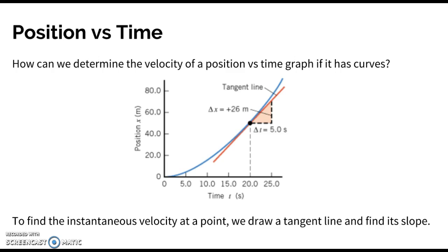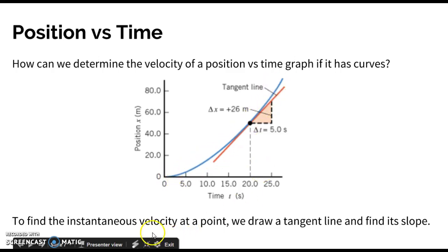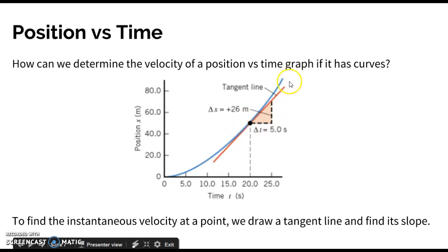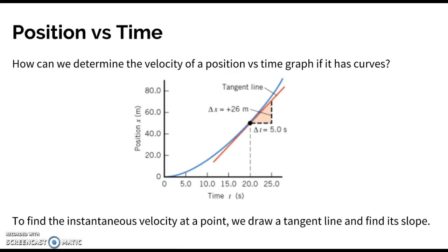What if the position versus time graph is curved? For an accelerating object, we can determine instantaneous velocity at any point by drawing a tangent line and finding its slope. At t=20 seconds on a curved graph, we draw a tangent line. Analyzing it, the change in position is 26 meters over a range of five seconds — 25 divided by five is one, so the instantaneous velocity is going to be slightly larger than one meter per second.